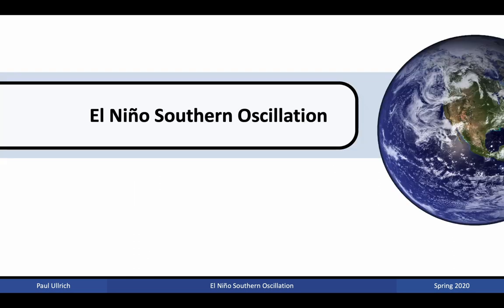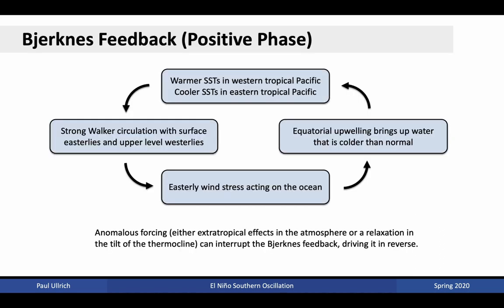Now that we've talked about the basics of the tropical circulation, let's look at the El Niño-Southern Oscillation, which has to do with strengthening and weakening of the circulation just discussed. Under the positive phase of the Bjerknes feedback, warmer sea surface temperatures in the western Pacific drive the Walker circulation, which leads to easterly wind stress, equatorial upwelling, and enhances the western-minus-eastern sea surface temperature gradient. However, anomalous forcing — either extratropical effects in the atmosphere, or a relaxation in the tilt of the thermocline in the ocean — can potentially interrupt the Bjerknes feedback.